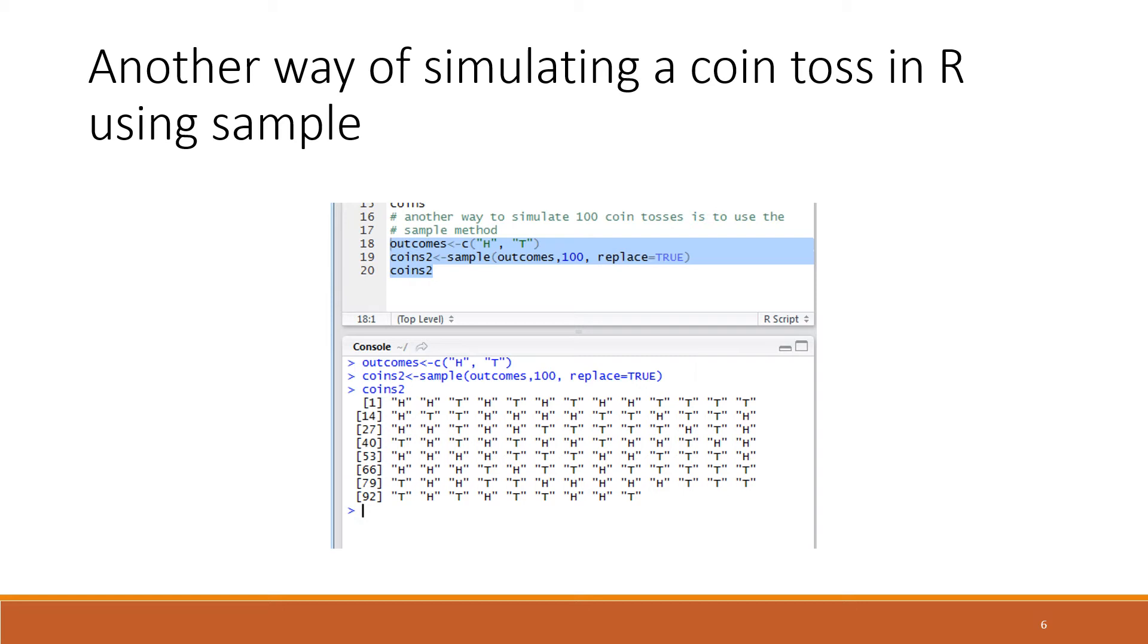We need that in this case because we have only two possibilities but we want 100 of them, so we certainly need to replace. In line 20 we repeat coins_two, so the output of the sample function was assigned to coins_two and then echoed out in the console.